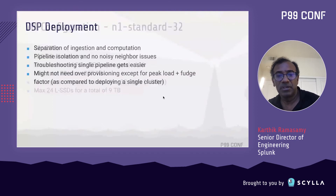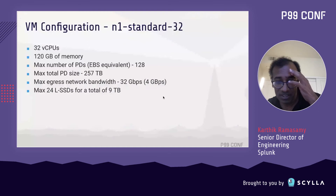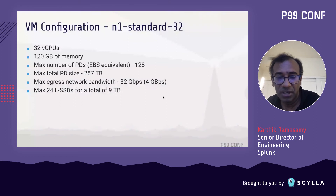The VM configuration for the DSP clusters is n1-standard-32, which consists of 32 vCPUs and 120 GB of memory. The maximum number of persistent disks is 128, with a max total persistent disk size of 257 terabytes. Max total network bandwidth is 32 gigabytes per second, and you can attach a maximum of 24 local SSDs for a total of nine terabytes.